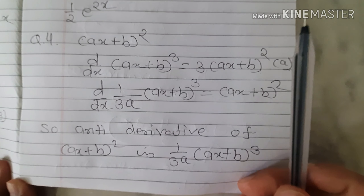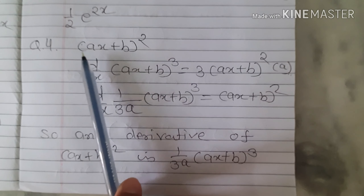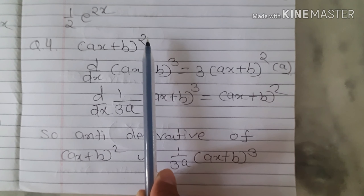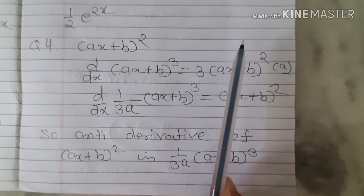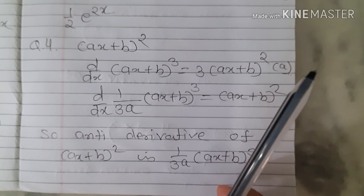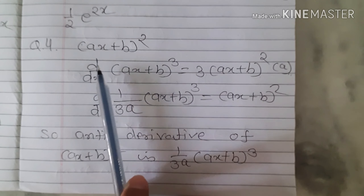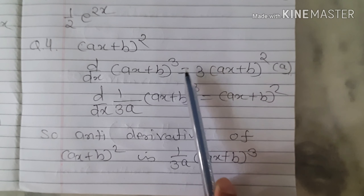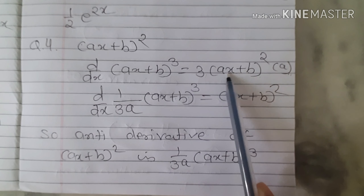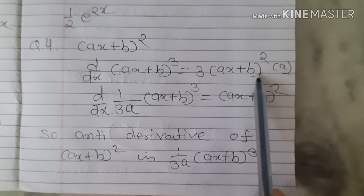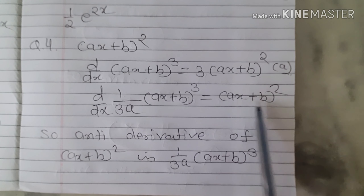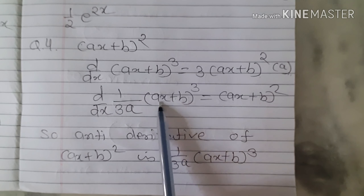Question 4: find the antiderivative of (ax+b)². Using the formula d/dx of x^n = n·x^(n-1), since the power is 2, we differentiate (ax+b)³: d/dx of (ax+b)³ = 3(ax+b)² times d/dx of (ax+b), which equals a. Cross-multiplying: d/dx of 1/(3a)·(ax+b)³ equals (ax+b)². So the antiderivative of (ax+b)² is 1/(3a)·(ax+b)³.